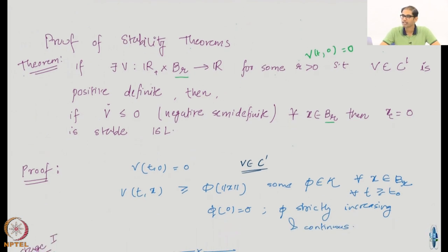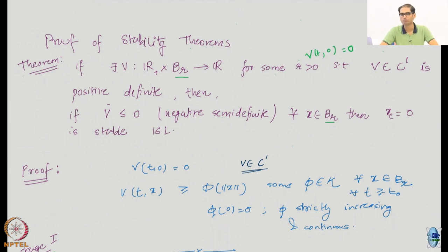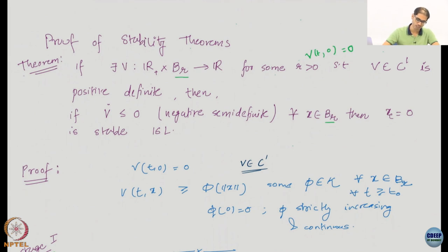You can pick up any good text in nonlinear control and expect to find this proof. I will prove only two results — a stability result and an asymptotic stability result — everything else is assignment. They are very simple: once you have done these two, going a little bit beyond is pretty easy.